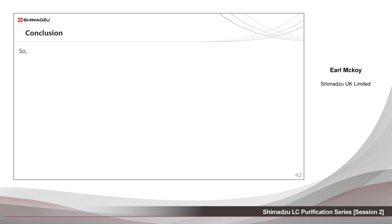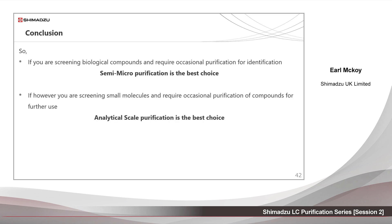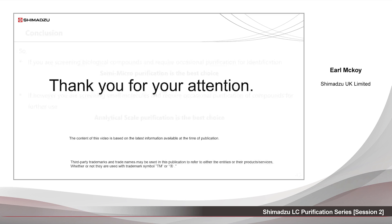To conclude: if you are screening biological compounds and require occasional purification for identification, semi-micro purification is the best choice. If, however, you are screening small molecules and require occasional purification of compounds for further use, analytical scale purification is the best choice. That's all from me. We hope you have found these sessions useful. Thank you very much, and enjoy the rest of your day.